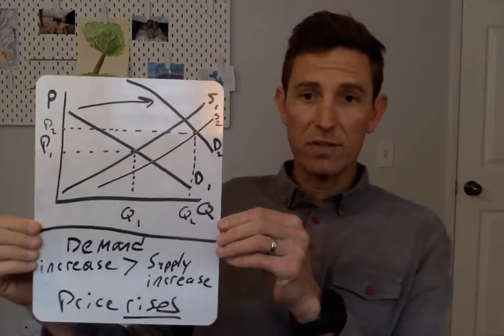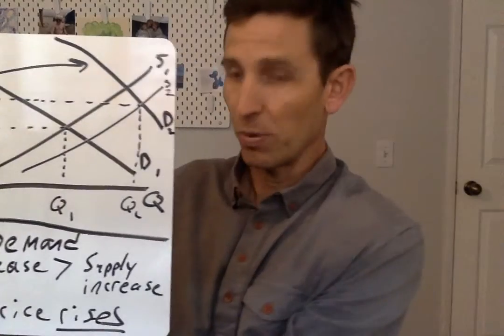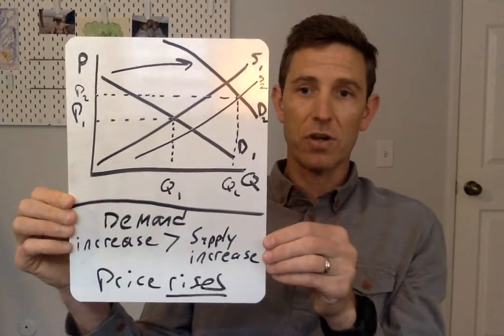The problem I want to show you first here is going to entail shifting both demand and supply to the right. What does that mean? There's an increase in demand for some reason, and at the same time an increase in supply. I've gone ahead and drawn these shifts on a little mini board. On this first one, we have a situation where both curves are increasing.